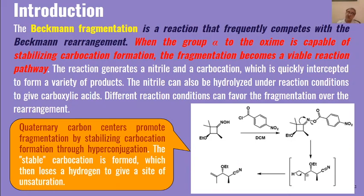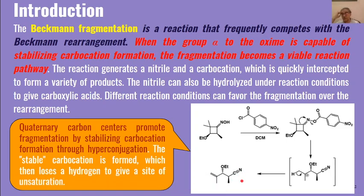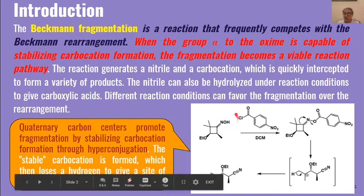This nitrile can undergo hydrolysis to give carboxylic acids as the product, or if partial hydrolysis is done, we can even get amides as the product. This is how we can differentiate between Beckmann fragmentation and Beckmann rearrangement.